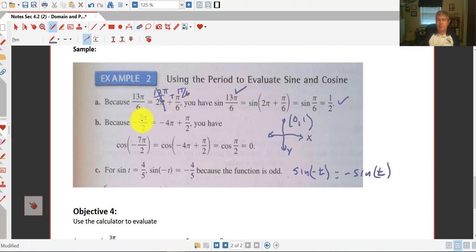And we can do the same thing with a negative angle. Negative 7 pi over 2 is super close to a negative 8 pi over 2. So that would be, excuse me, that would be 2 revolutions. So if I subtract out negative 4 pi, I'm left with positive pi over 2.